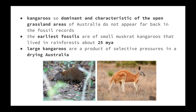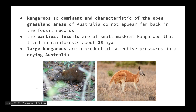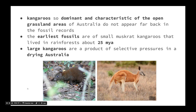An animal example of a species that changed as a result of the environment is the kangaroo. Kangaroos are dominant and characteristic of our open grasslands, but they do not appear very far back in fossil records. The earliest fossils are of small musky rat-kangaroos, similar to the ones in the picture, that lived in rainforests about 25 million years ago. Their fur is quite dark and they have very short legs, allowing them to hide amongst the foliage of the rainforests. But as Australia moved north and dried out, the amount of rainforest decreased, leaving these organisms exposed to predators and causing population numbers to drop.